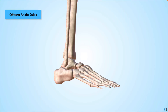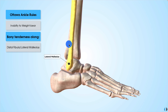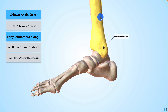The first point of the Ottawa rules is that we assess a patient's walking — specifically, the inability to bear weight both immediately after the injury and for four steps during evaluation in the emergency department. We couple this with pain in one of the following areas: bony tenderness along the distal 6 cm of the posterior edge of the fibula and the tip of the lateral malleolus, or bony tenderness along the distal 6 cm of the posterior edge of the tibia and the tip of the medial malleolus.